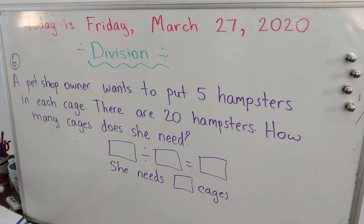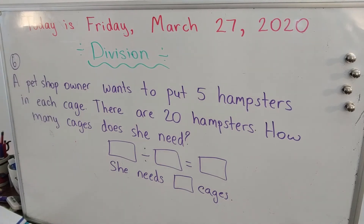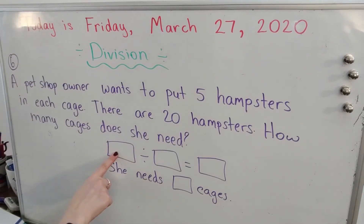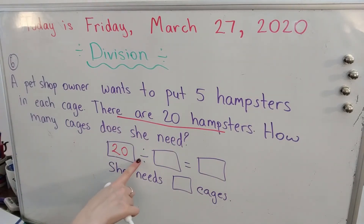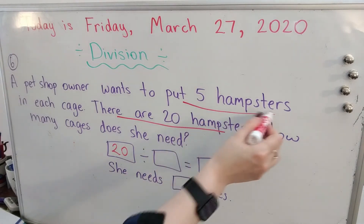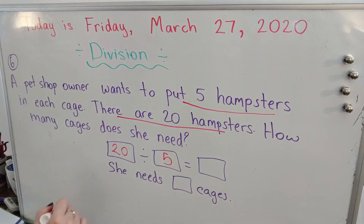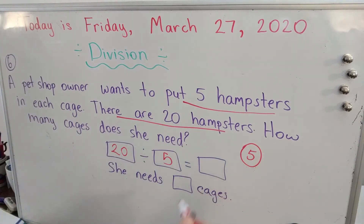All right, and now we're ready to do our very last word problem of the day. You guys, you're doing a great job. Let's read this one. Number six — a pet shop owner wants to put five hamsters in each cage. There are 20 hamsters. How many cages does she need? So what number are we going to start with? The total — you are correct — 20 hamsters. This is our total. There are 20 hamsters altogether. We're going to divide 20 hamsters by five hamsters in each group, because she wants to put five hamsters in each cage. So here's a cage — she wants to put five hamsters.